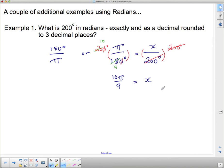Now, that is exactly. So this is our exact answer. And in order to get it in the approximate answer, what I need to do is just punch this into the calculator. I need to type in 10 times pi divided by 9.